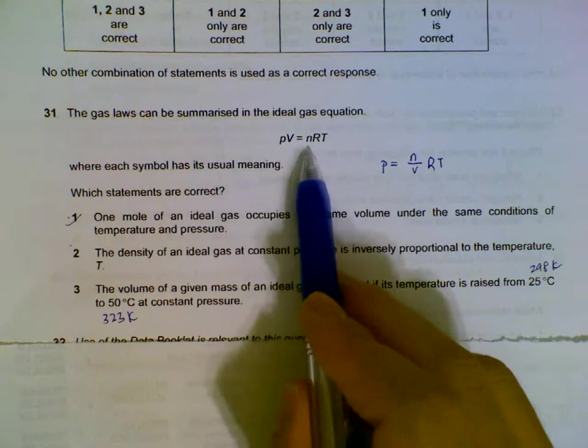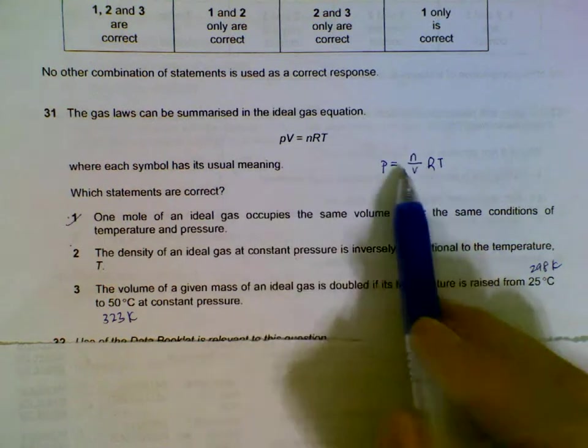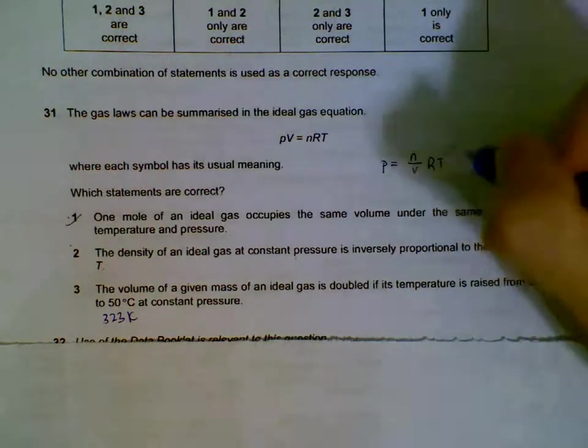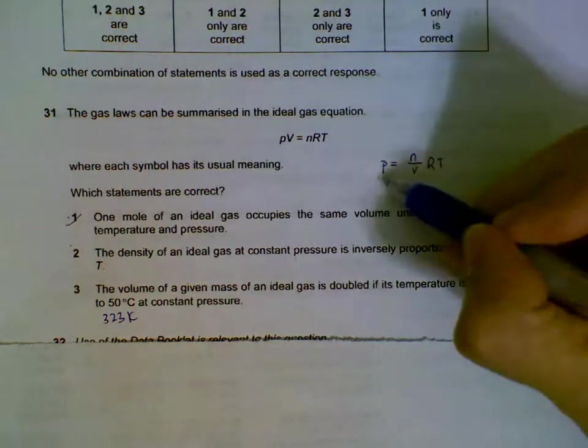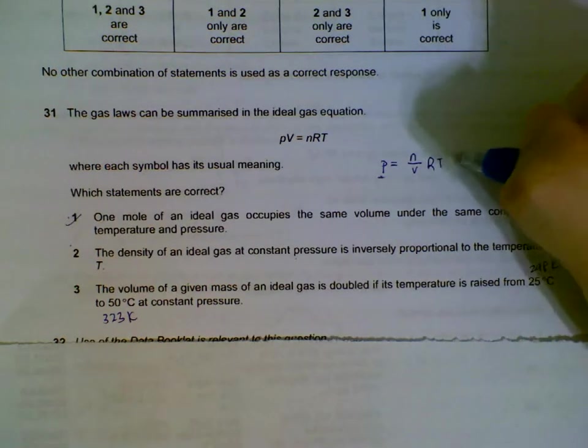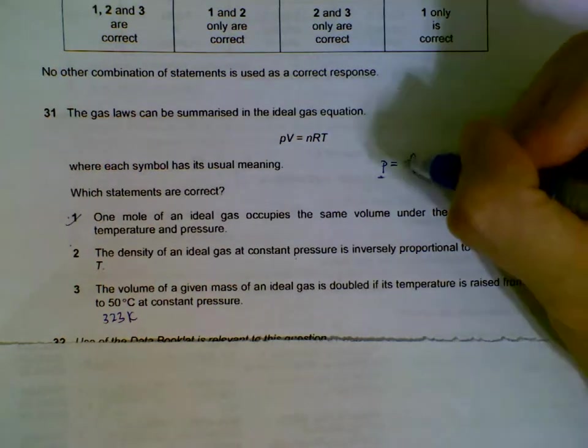We can bring the V over so that we have density over this side, mass over volume. We can see that for pressure to remain the same, when your temperature goes up, your density must go down. So they are inversely proportioned, so number two is also true.